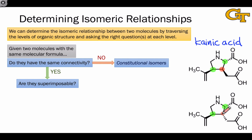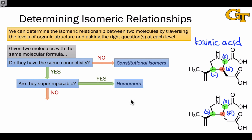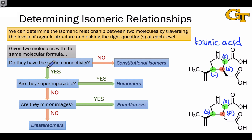We can verify all of this with RS labels. Two of the configurations are S in both molecules, but the central stereocenter is S in the top molecule and R in the bottom molecule. So the molecules are not superimposable — they're not homomers. Are they mirror images? This is equivalent to asking whether they differ in all of their configurations. As the highlighting shows, they do not differ in all of their configurations, so they are not enantiomers. To summarize: they have the same connectivity, they are not superimposable, and they are not mirror images — allowing us to conclude that they are diastereomers.